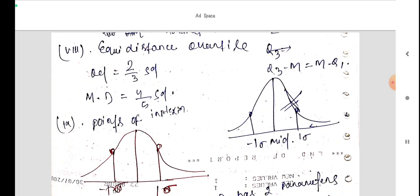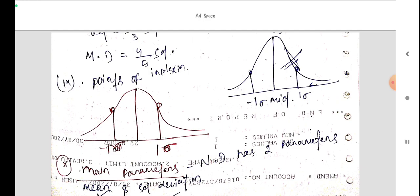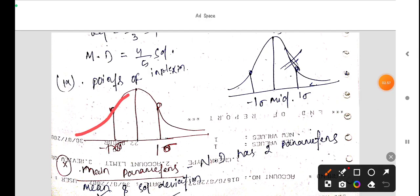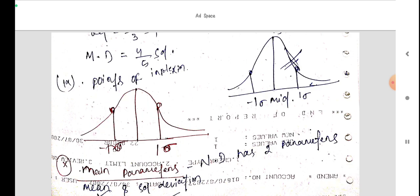There is point of inflection. Point of inflection is where this rises. Rising point and here it is the declining point. So these two points are the inflection points. There are two points of inflection.